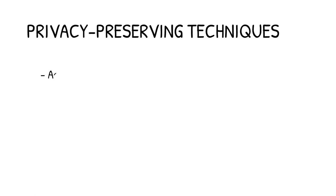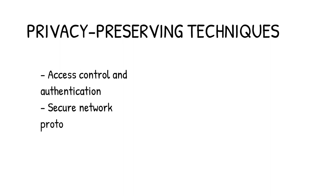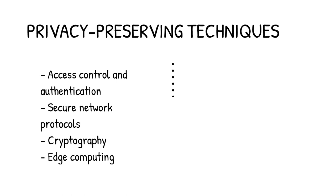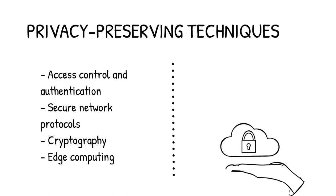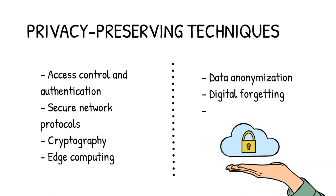IoT devices usually have the following functions to preserve users' privacy: access control and authentication, secure network protocols, cryptography, and edge computing — which means computation and data storage on the local device. But if the data is transferred to the cloud, the following techniques can be applied to crowdsourced datasets to avoid user profiling and linkage: data anonymization and consumerization, digital forgetting and the concept of differential privacy.